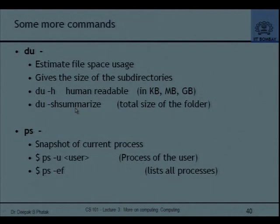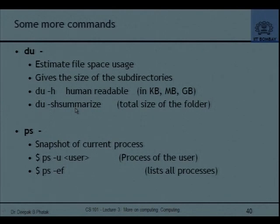Additional useful commands: df tells you about disk space usage. ps gives you a snapshot of currently running processes — remember that a process is the basic unit executing in a UNIX environment. Each process has a process ID and associated information such as how much CPU time it has taken. Once you identify a process number, other utilities can give you more details about that process. ps is essentially a command giving a snapshot of the current processes.